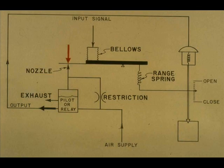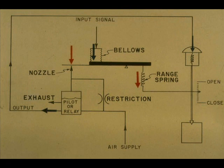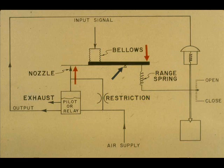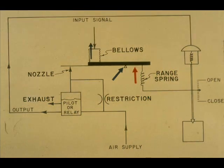When the input signal increases, the flapper covers the nozzle. The relay output increases, making the valve stem lower, which produces an increased downward pull on the beam. The beam pivots at the fulcrum and uncovers the nozzle, and the system is again in equilibrium. It will remain there until a disturbance occurs, such as an input change or a valve stem load change. On a decreasing input signal, the actions are the reverse of those resulting from an increased signal.